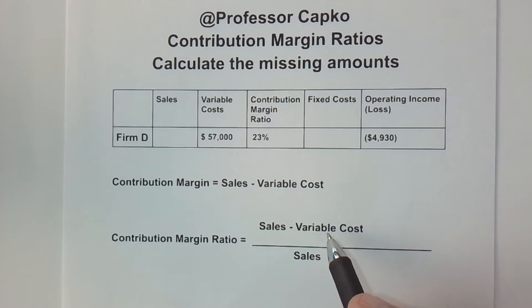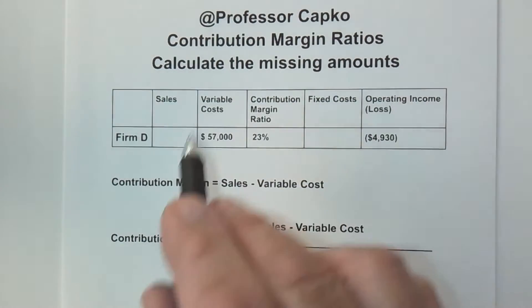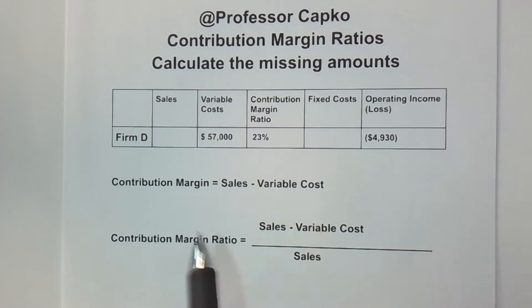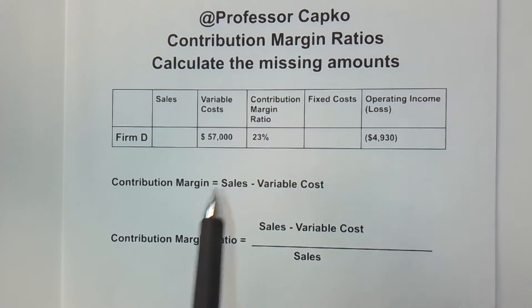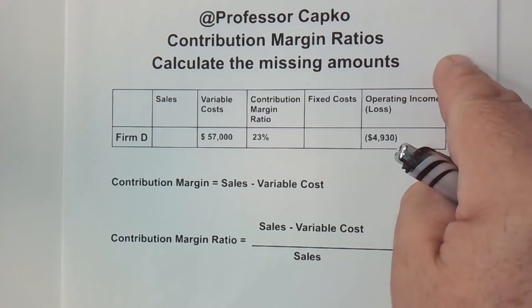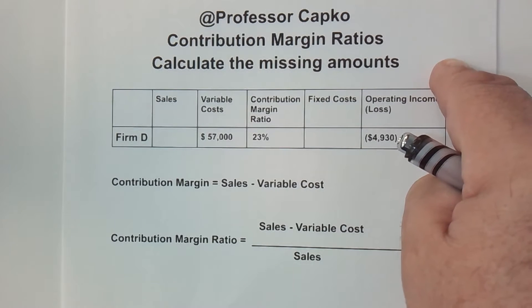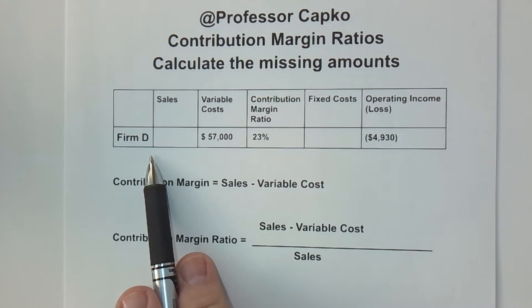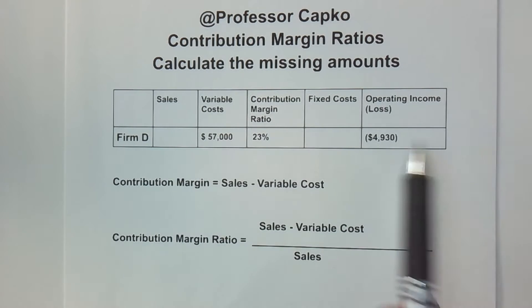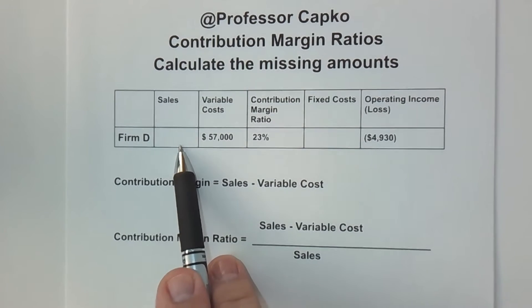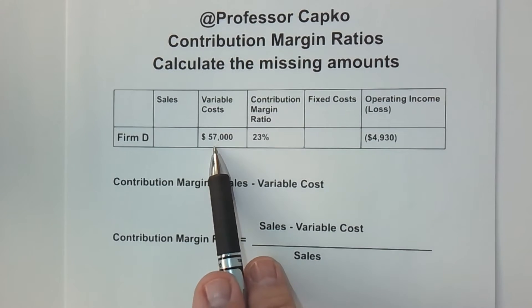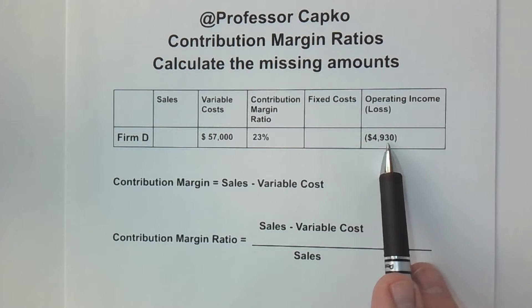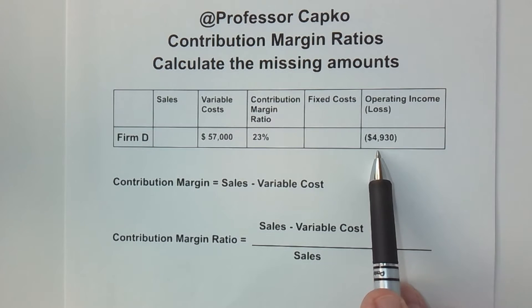I did a prior video in which I did a whole bunch of companies where we calculated everything from variable cost to contribution margin and fixed costs, and if you missed that video I've linked it up here for you. Today's video is a breakdown of one of those situations — that would be Firm D. I want to go into detail on that so I can make sure that you know how to find the sales and the fixed costs when you know variable costs, contribution margin, and the operating income — or in this case, it's a loss.